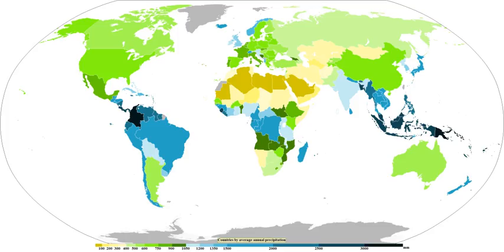On the large scale, the highest precipitation amounts outside topography fall in the tropics, closely tied to the intertropical convergence zone, itself the ascending branch of the Hadley Cell. Mountainous locales near the equator in Colombia are amongst the wettest places on Earth. North and south of this are regions of descending air that form subtropical ridges where precipitation is low, and these regions make up most of the Earth's deserts. An exception is in Hawaii, where upslope flow due to the trade winds leads to one of the wettest locations on Earth. The flow of the westerlies into the Rocky Mountains leads to the wettest and snowiest locations within North America. In Asia during the wet season, the flow of moist air into the Himalayas leads to some of the greatest rainfall amounts measured on Earth in North-East India.